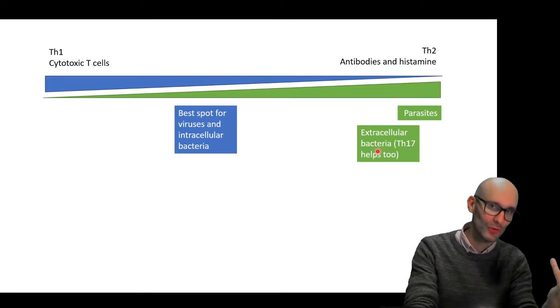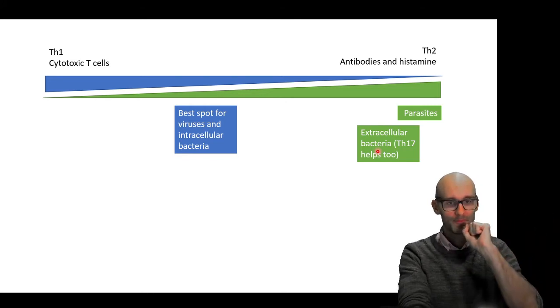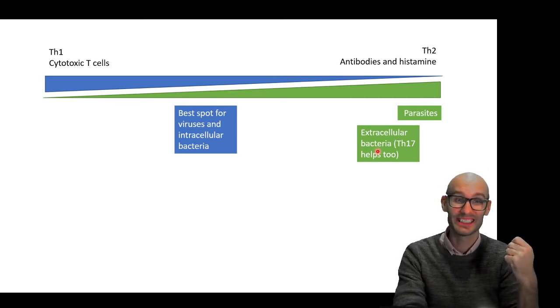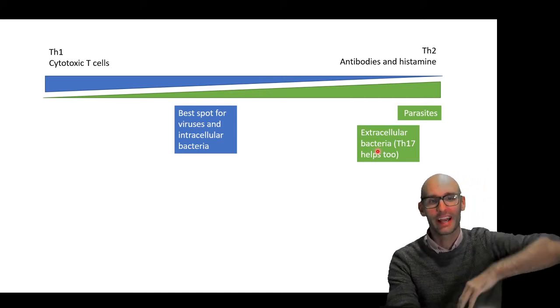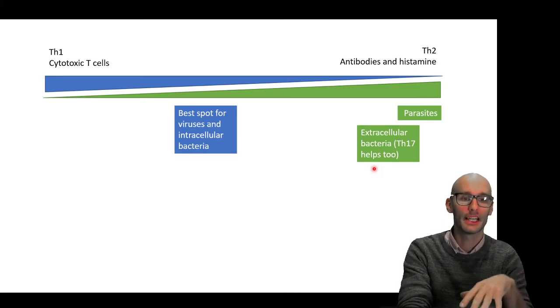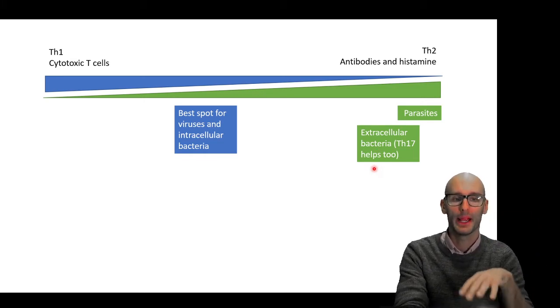Inflammation from basophils is good for bacteria. And antibodies are good for bacteria too. And also a Th17 response. That's on a different axis. That's not on this continuum here, but also a Th17 response is excellent for fighting bacteria too.